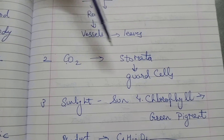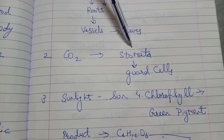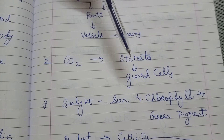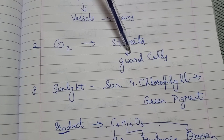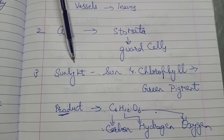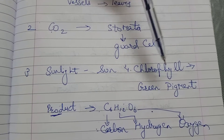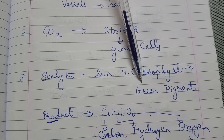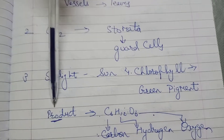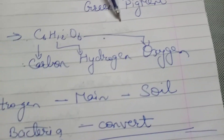The second raw material is carbon dioxide, taken in by stomata, which is the nose of the plant. Stomata is guarded by the guard cells. The third raw material is sunlight, taken from the sun. Chlorophyll is the green pigment already present in the plants. The product obtained is carbohydrates — carbon, hydrogen, and oxygen.